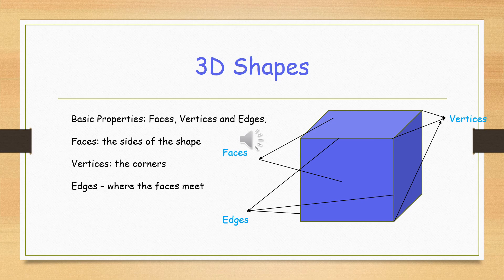You get the vertices, these are the corners or the pointy bits of the shape. Then you get the edges, where the two, where different faces, two faces meet. Those are called the edges.